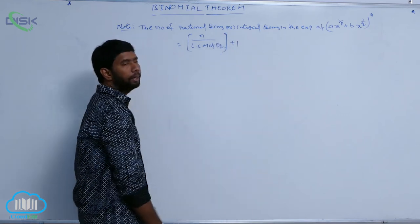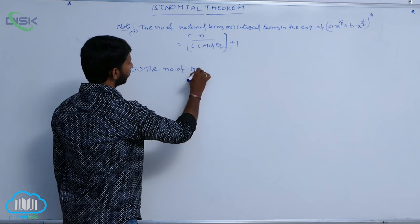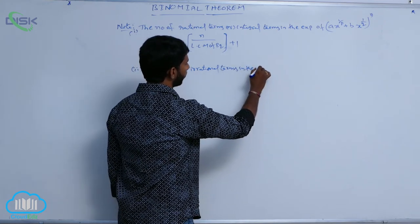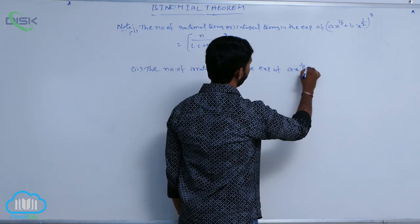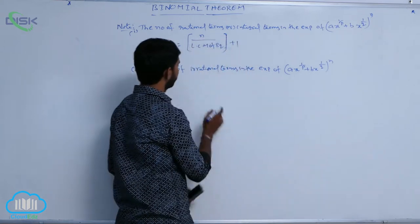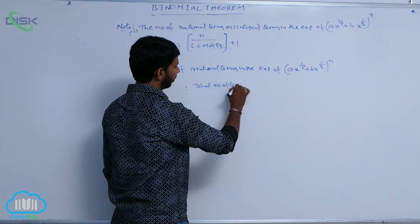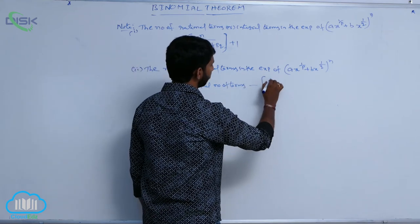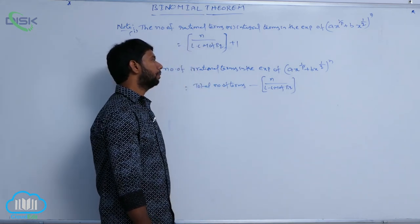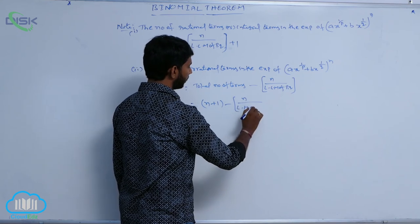The number of irrational terms in the expansion of (a^(1/p) + b^(1/q))^n is equal to the total number of terms minus floor(n / LCM(p, q)), which equals (n + 1) minus floor(n / LCM(p, q)).